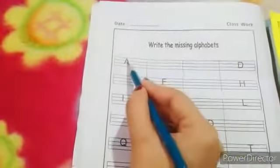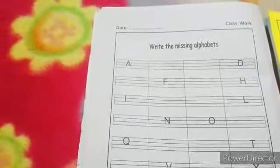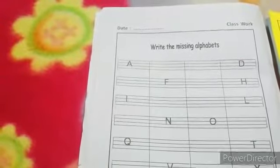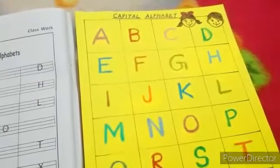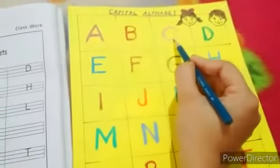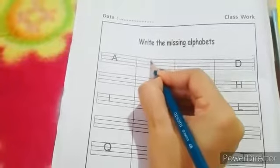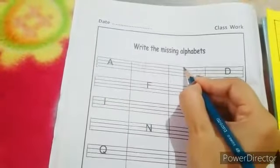Start from the letter A over here on the first row. As you can see, the next two letters after A are missing. We need to check the chart and find out the missing letters. So tell me kids, which are these missing letters? Yes, they are B and C. So let us write B and C over here. B, C.